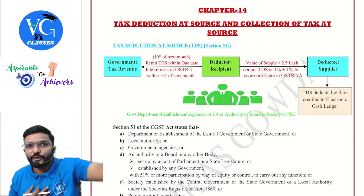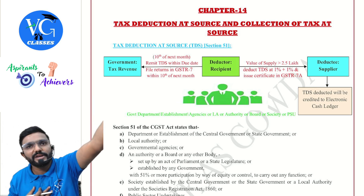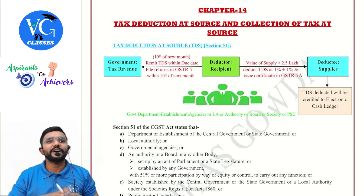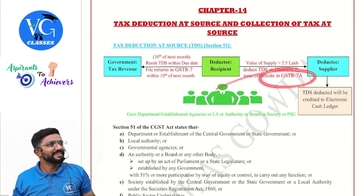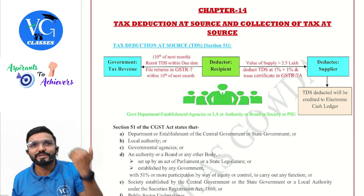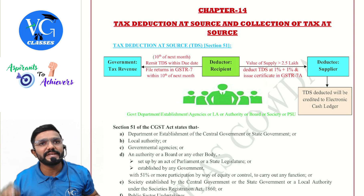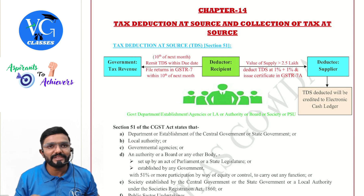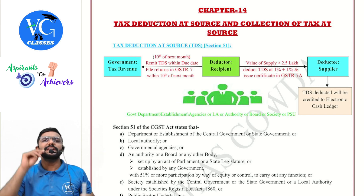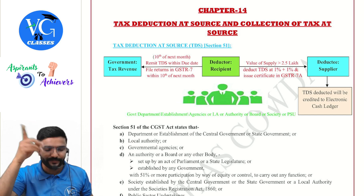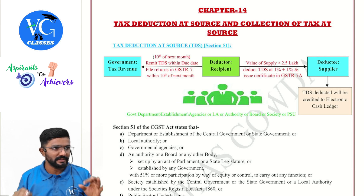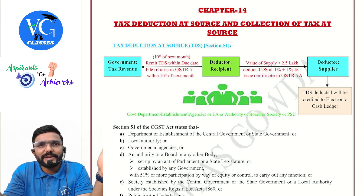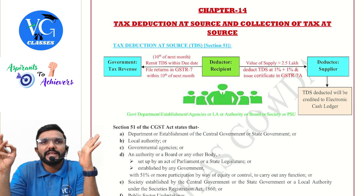Assume I am the supplier — you deducted 1%+1% TDS before paying me. It is as if I have paid it, so it will reflect in my electronic cash ledger. For you to claim it or to prove it, the deductor should issue a document — a GSTR-7A certificate — to show that the 2% was deducted and given to the government. Whatever TDS the deductor has deducted, they must deposit it to the government within the 10th of the next month and also file GSTR-7 returns within the 10th of next month.